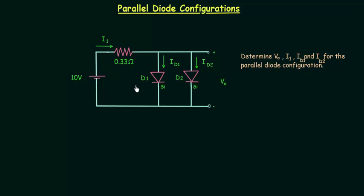In this example we need to determine V0, I1, Id1 and Id2. V0 is the voltage across these two diodes. I1 is the current through this resistance. Id1 is diode current for first diode. Id2 is diode current for this second diode.